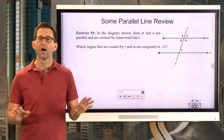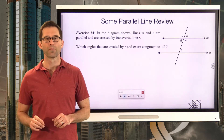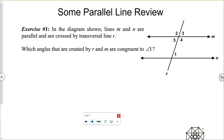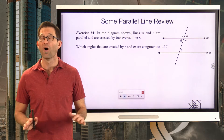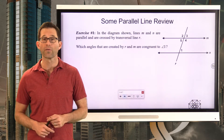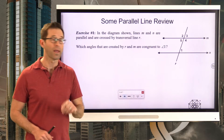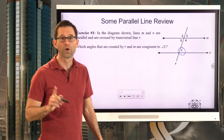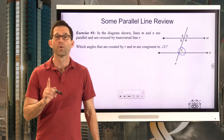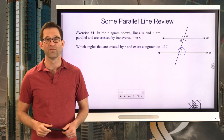First, a little bit of review of parallel lines. Exercise number one. In the diagram shown, lines M and N are parallel and are crossed by transversal line R. Which angles that are created by R and M are congruent to angle one? I want you to try to remember back to all the work we did with parallel lines — we spent something like three or four lessons on them. There are some angles up here congruent to angle one. Which ones are they? Pause the video now and see if you can recall this.